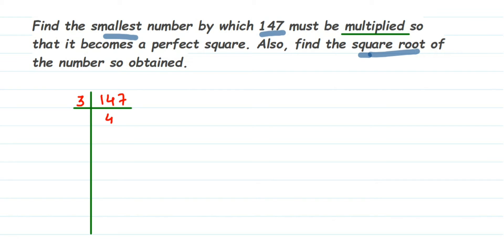One way to check divisibility by 3 is to add the individual digits — if their sum is divisible by 3, the whole number is divisible by 3. Continuing, 49 is not divisible by 3. We skip 5 and move to 7: 7 sevens are 49. So the prime factors are complete.